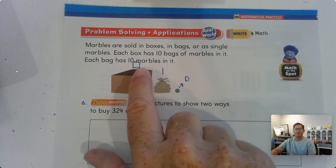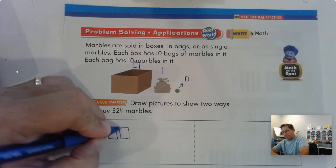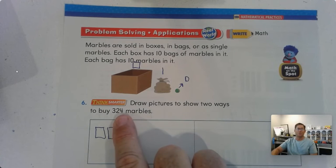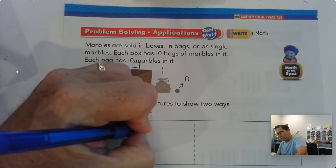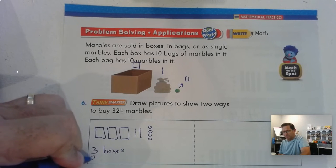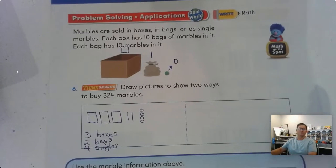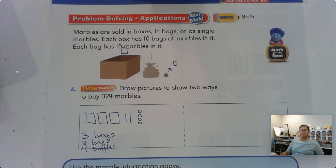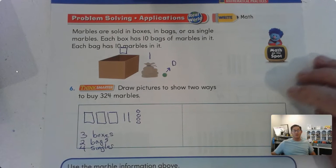So how can we show 324 in two different ways? Well, an easy way would be three boxes, right? Because that's 324. Well, I could have two bags and I could have four singles. So three boxes, two bags, four singles. That would be 324. What's another way we could do it?